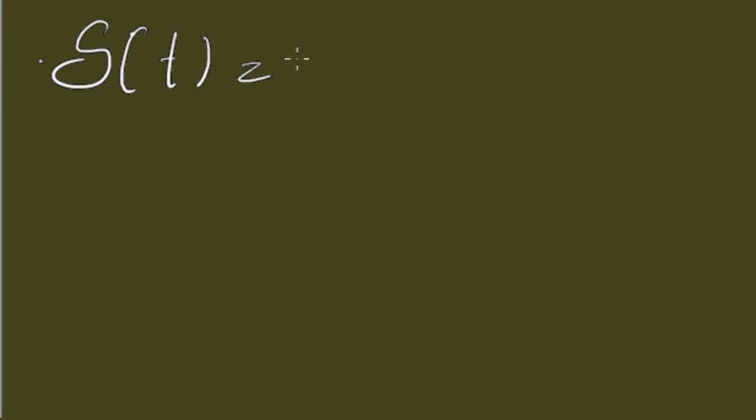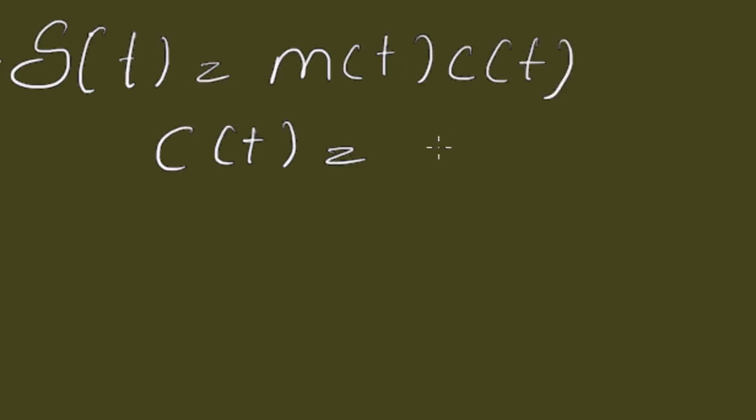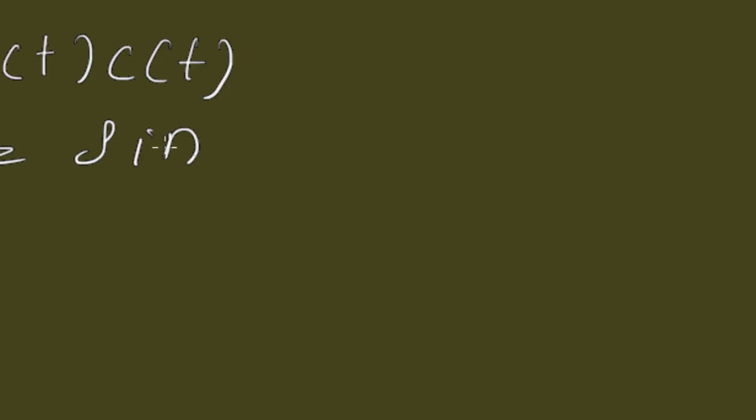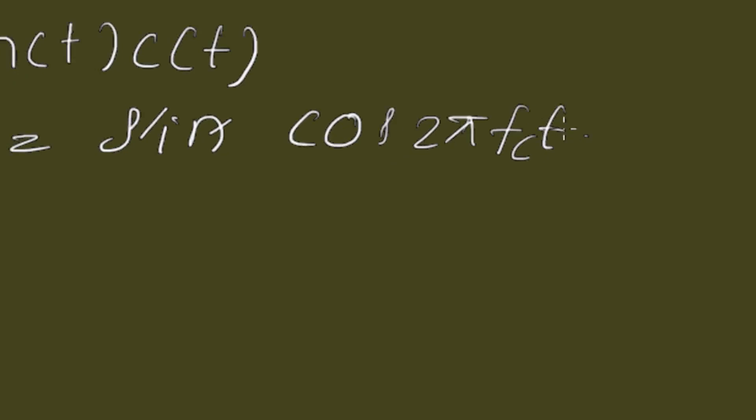So, the modulated signal is equal to M(t) into C(t). As we know that C(t) is a very high-frequency carrier, let us consider C(t) to be some sine or cos 2πfct.